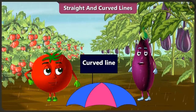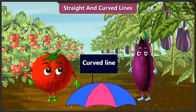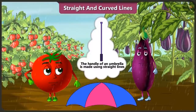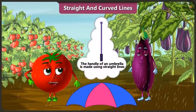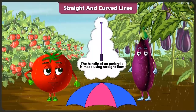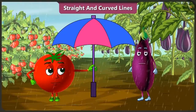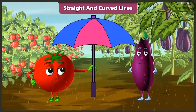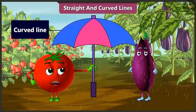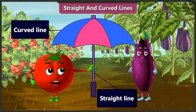Yes, look, there are only curved lines in an umbrella. Didn't you notice? The handle of an umbrella is made using a straight line. Yes, you are right. This straight line becomes the handle of this umbrella. Now you did it right. The umbrella is made using both curved and straight lines.